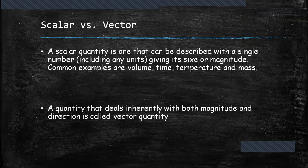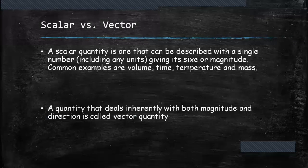Common examples are volume, time, temperature, and mass. While vector quantities are the quantity that deals inherently with both magnitude and direction.